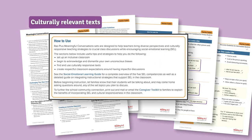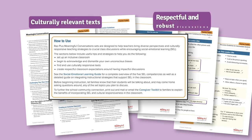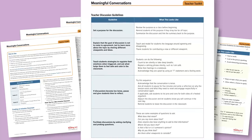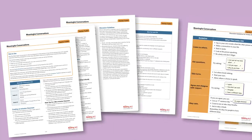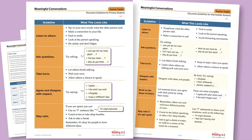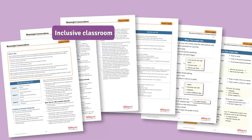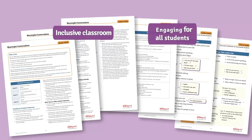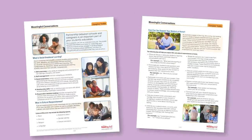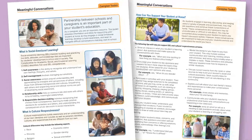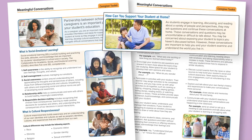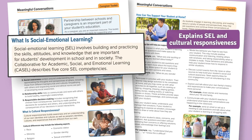Use the teacher toolkit to challenge your own unconscious bias and evaluate your classroom practices. You'll find tips to help you choose culturally relevant texts and guidance on having respectful and robust discussions. Use the teacher discussion guidelines to help you facilitate conversations, then share the student version to support primary and intermediate students and feel confident that your classroom is inclusive, representative, and engaging for all students.